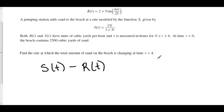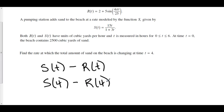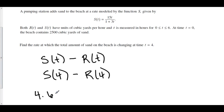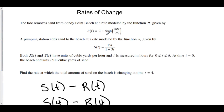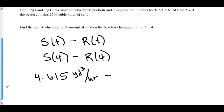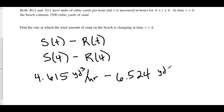We can plug in 4 to find the rate of change at time t equals 4. So we have s of 4 minus r of 4. If you plug 4 into s, you get 60 over 13, which gives approximately 4.615 cubic yards per hour. And plugging 4 into r gives 2 plus 5 sine of 16π over 25, which on a calculator gives approximately 6.524 cubic yards per hour.